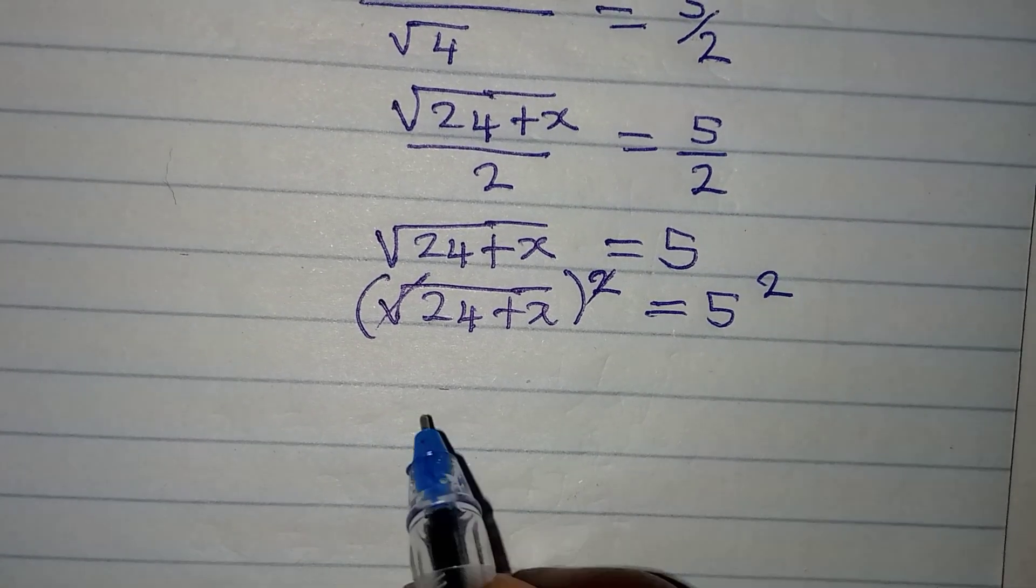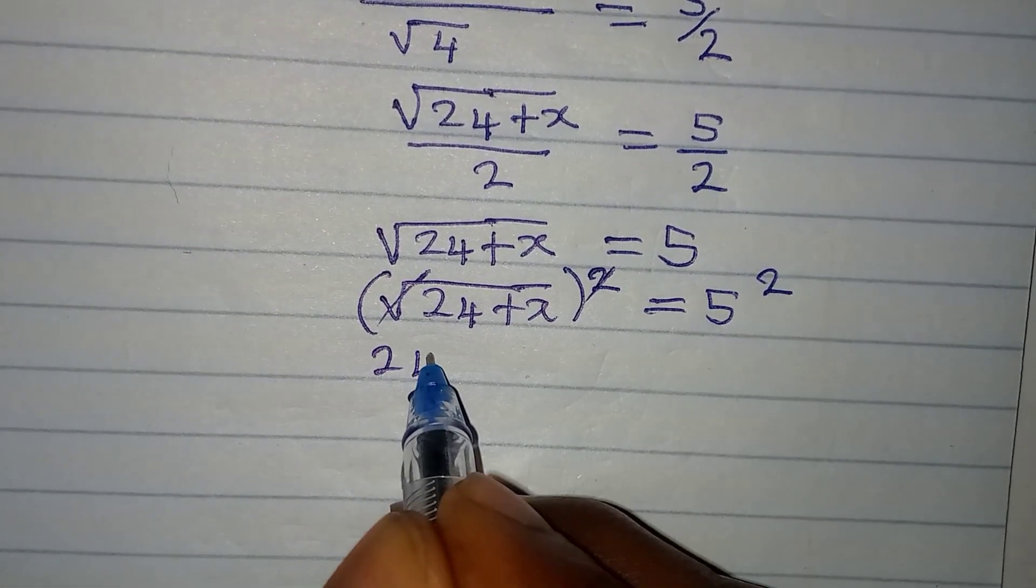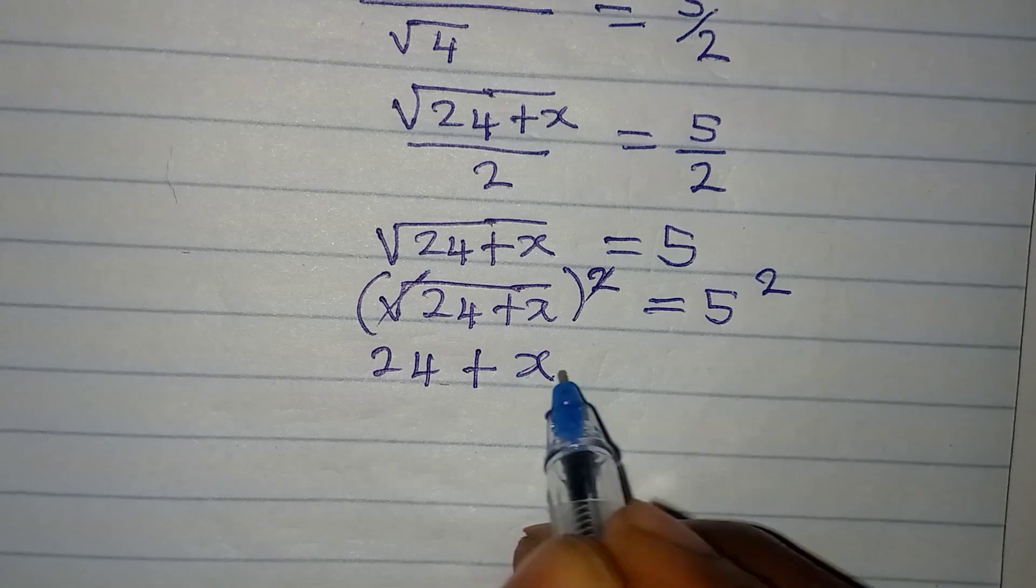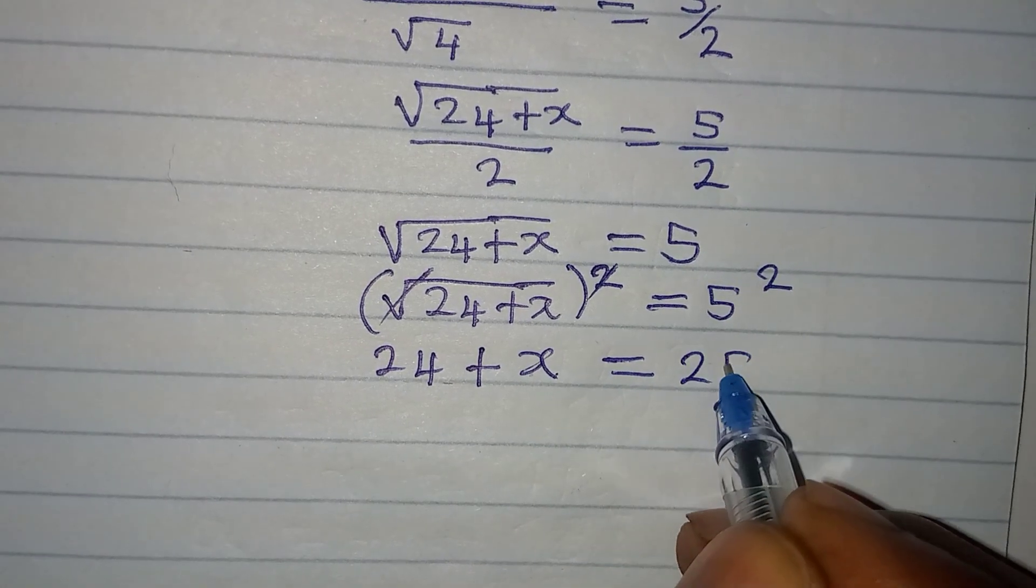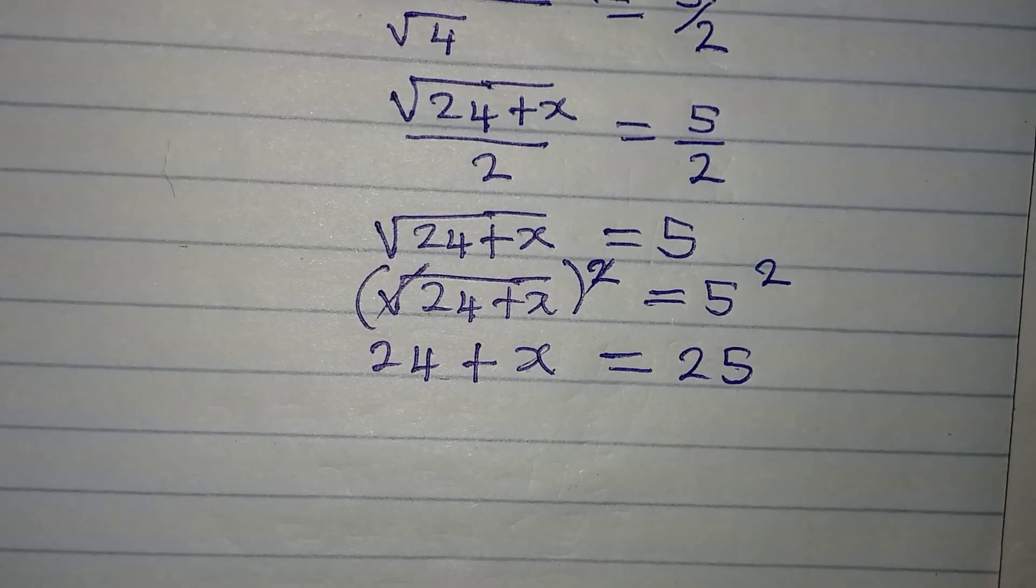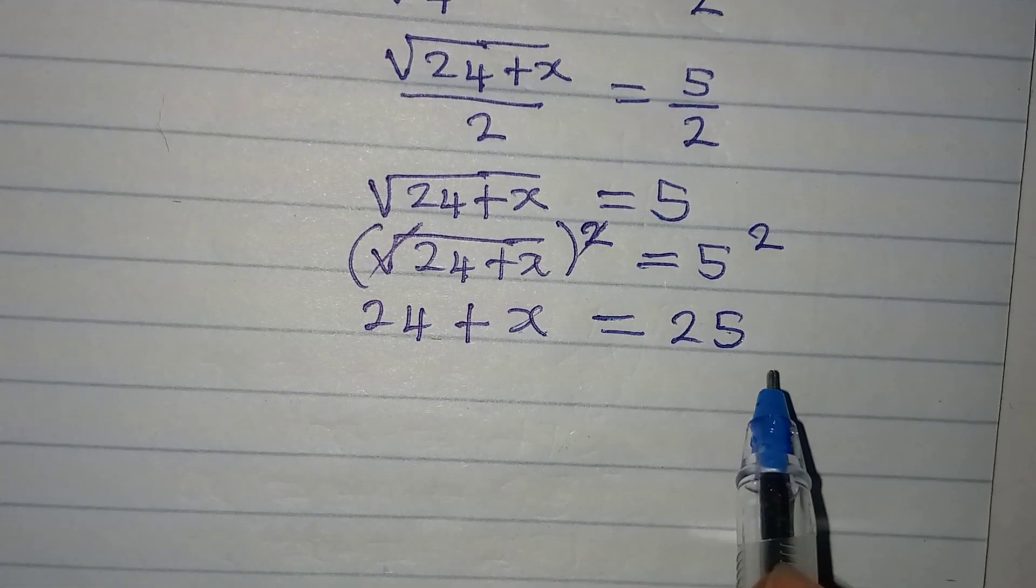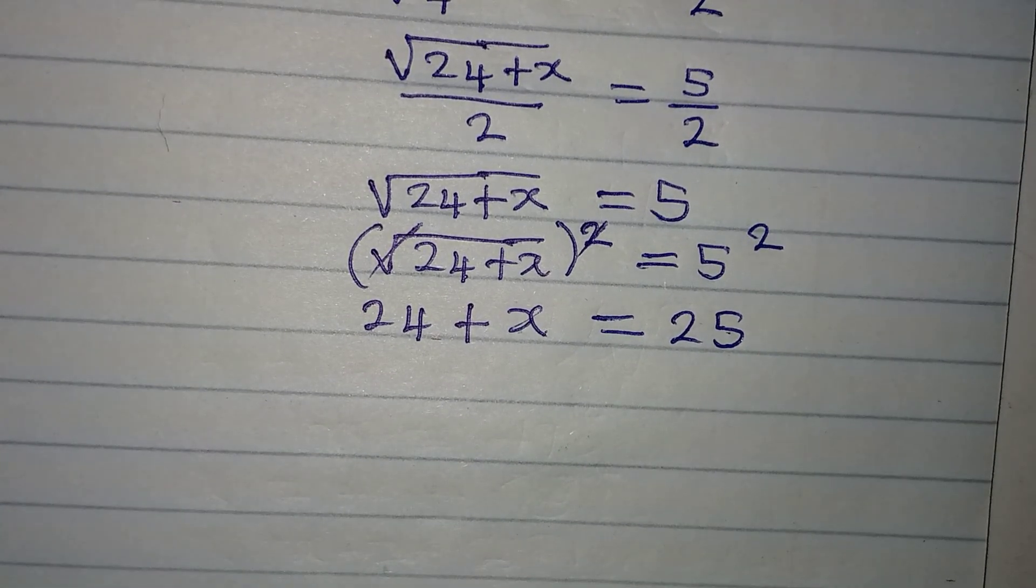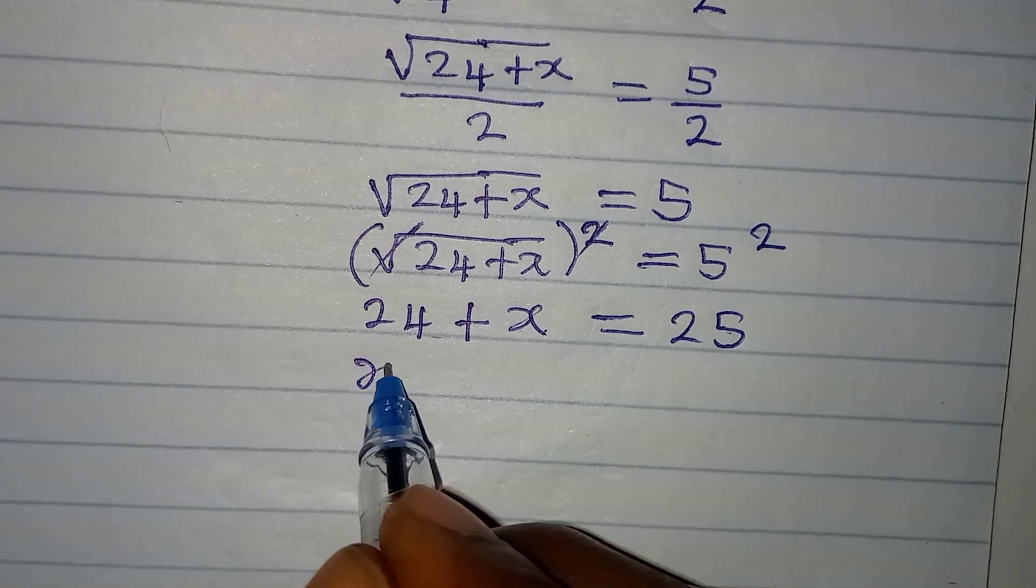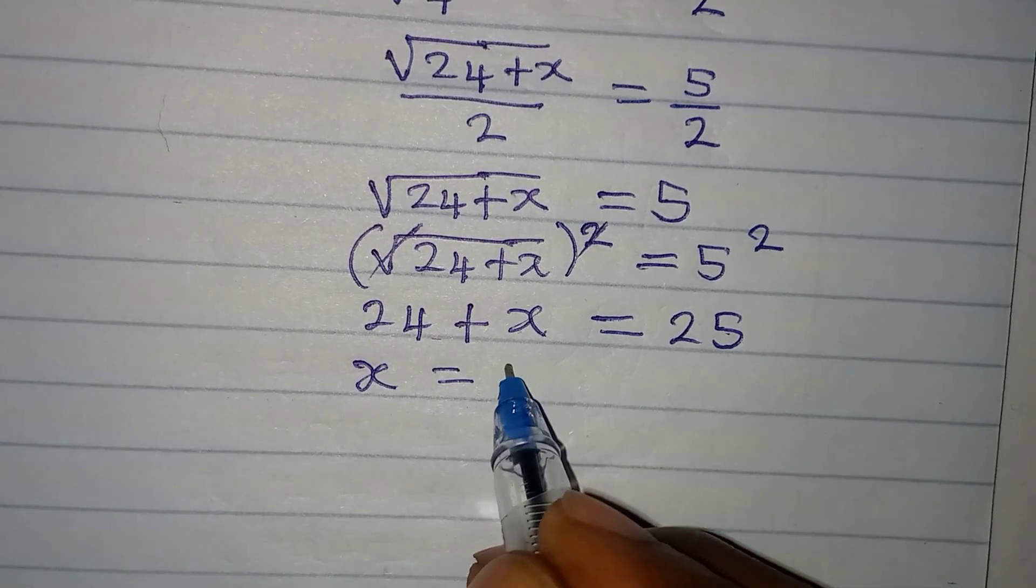5 squared is 25, not 10 but 25, because it is 5 times 5. Now let's make x the subject so that x will be equal to 25 minus 24, meaning that x is equal to 1.